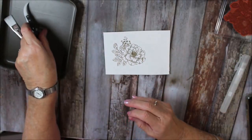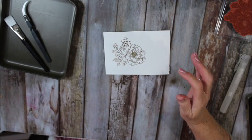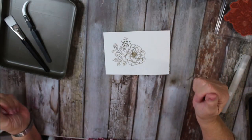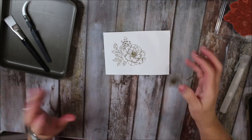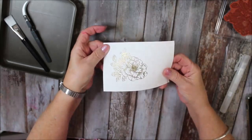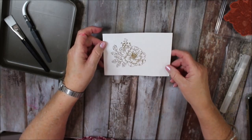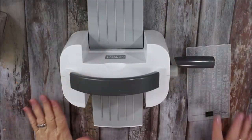Our embossing powders come in white, black, copper, silver, and clear. So this is gold. I use all the different colors for just for different projects.